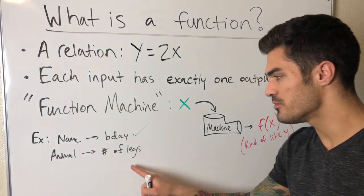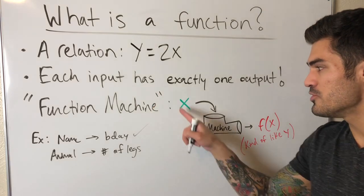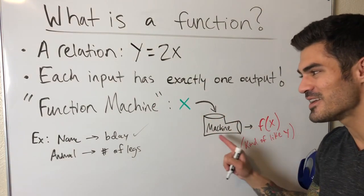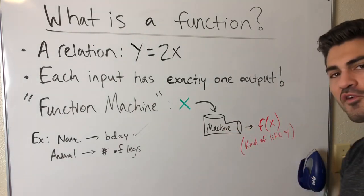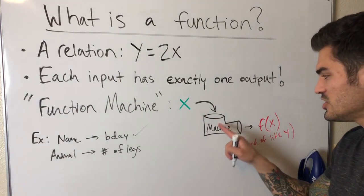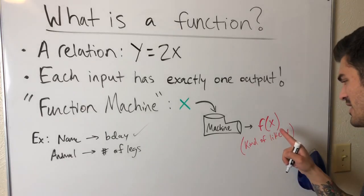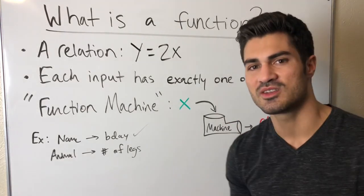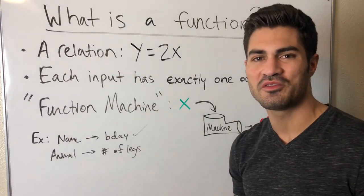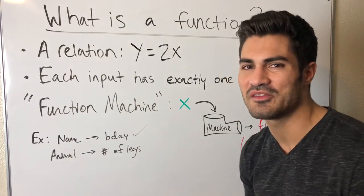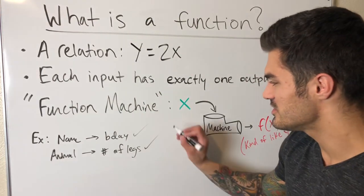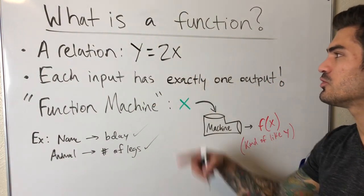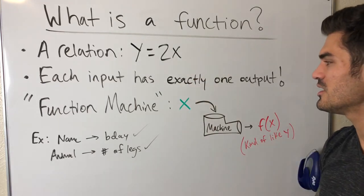Another example: the type of animal and the number of legs it has. Input is 'pig' — output is four. Input is 'spider' — output is eight. An animal has one number of legs, so this is again a function. Now consider y = 2x — is this a function?